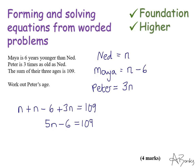And I'm just going to solve this equation. So I'm going to add six to both sides. So that gives me five n is 115. And then divide by five.